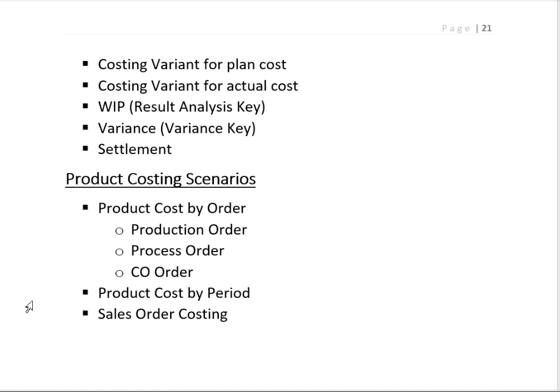The Product Costing scenarios are mainly divided into three types. The first is Product Cost by Order, which is subdivided into three types: Production Order, used in the discrete manufacturing industry; Process Order, used in the process industry; and CO Order, which is used to calculate the standard cost estimation without quantity structure.